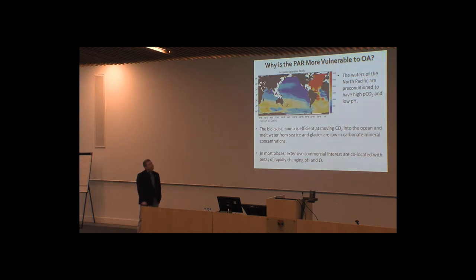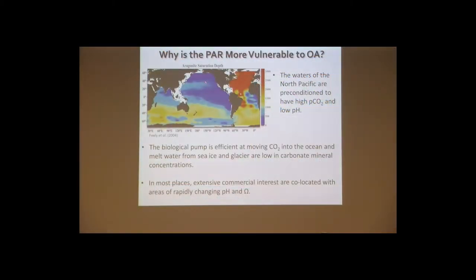Why is the Pacific Arctic region more vulnerable to ocean acidification? Looking at Dick's 2004 paper, the saturation horizon in the northern Pacific is very near the surface — these waters are already preconditioned to have low saturation states. In the Gulf of Alaska and Bering Sea, the biological pump is very effective at moving CO2 from the atmosphere through photosynthesis down into the water column, creating large respiration signals. Additionally, sea ice melt and glacial influence drive a reduction in total alkalinity and saturation state — anthropogenically induced but not necessarily CO2-driven OA, yet still an exacerbation of the reduction in omega.